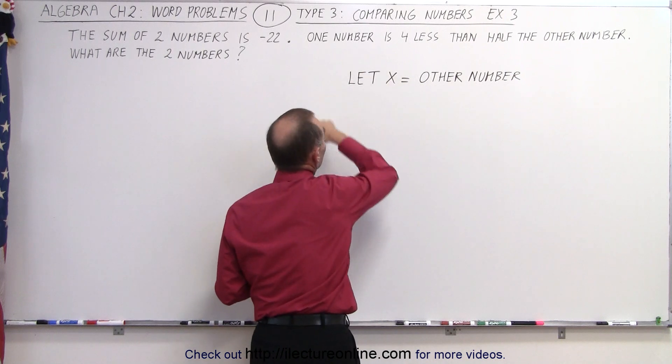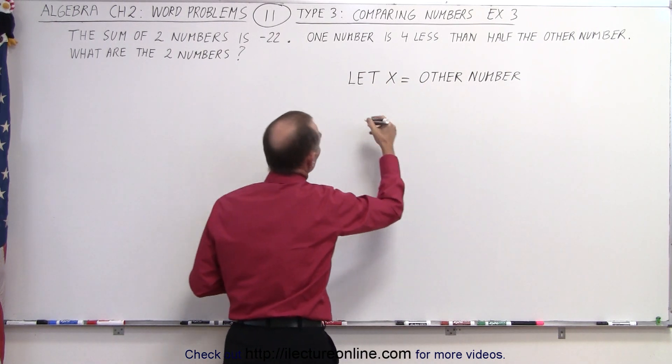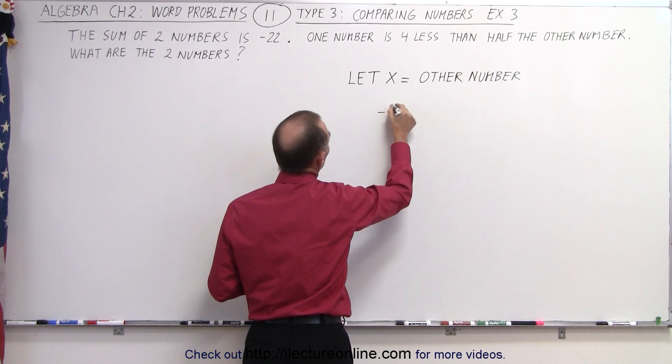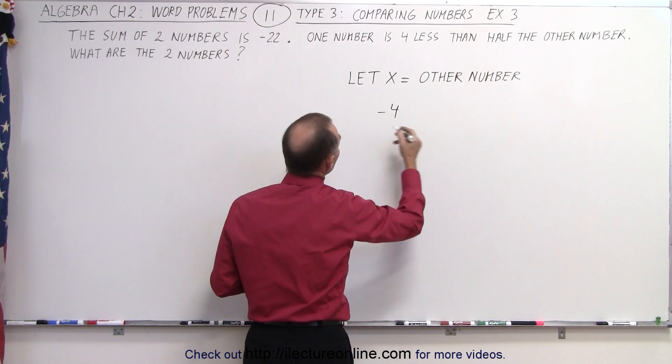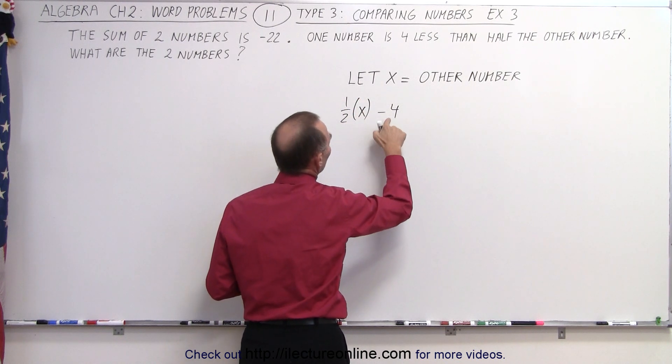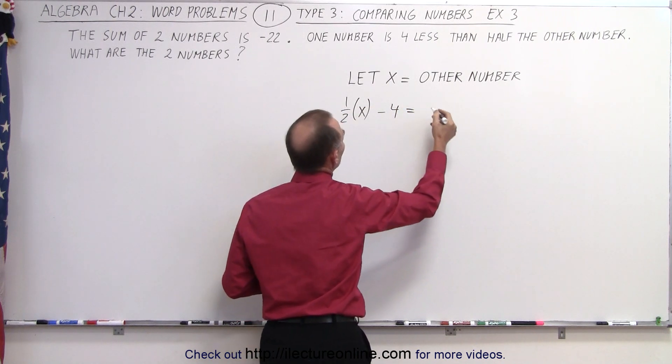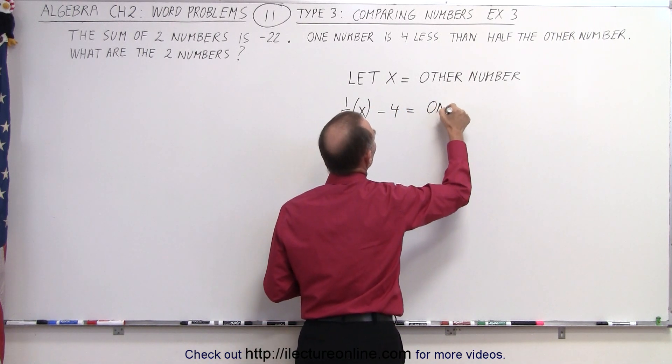And then the one number can be defined as four less than half the other number. So four less means minus four, and half means one half times x. So this is four less than half the other number, and so this is therefore equal to the one number.